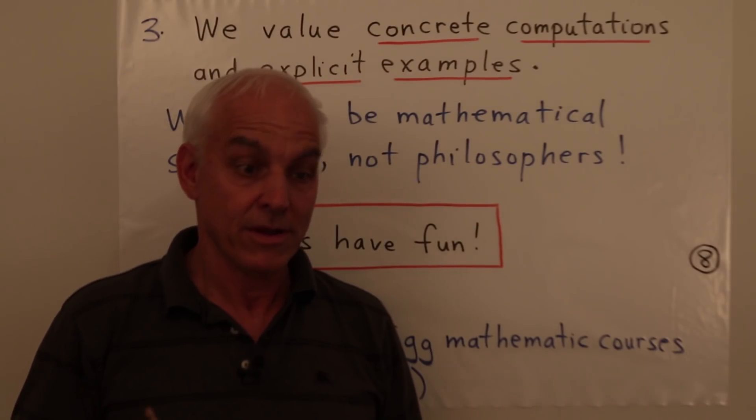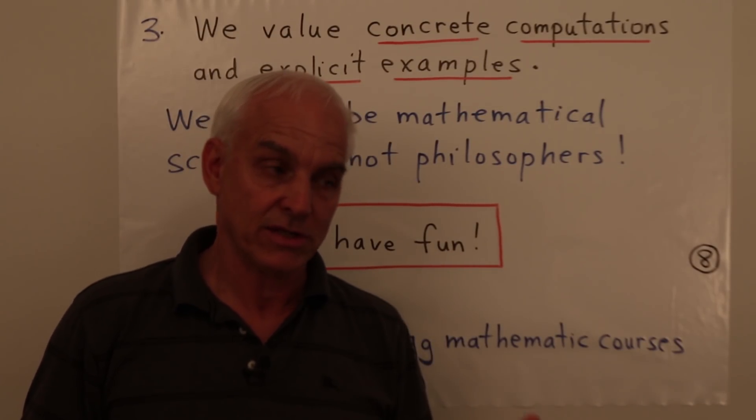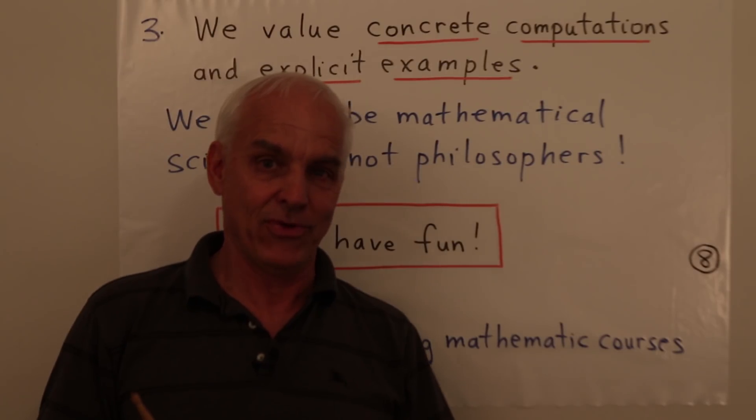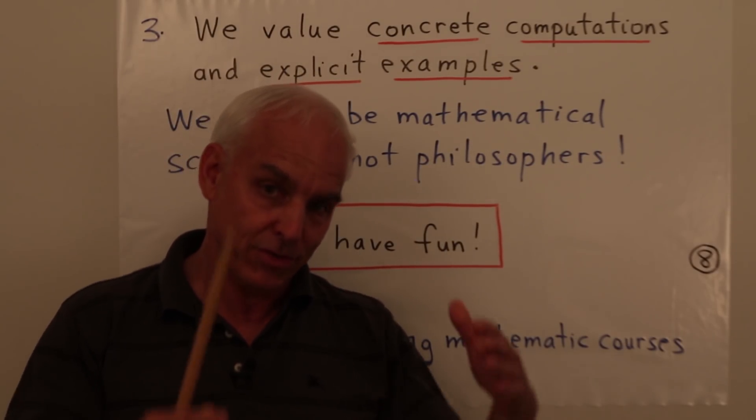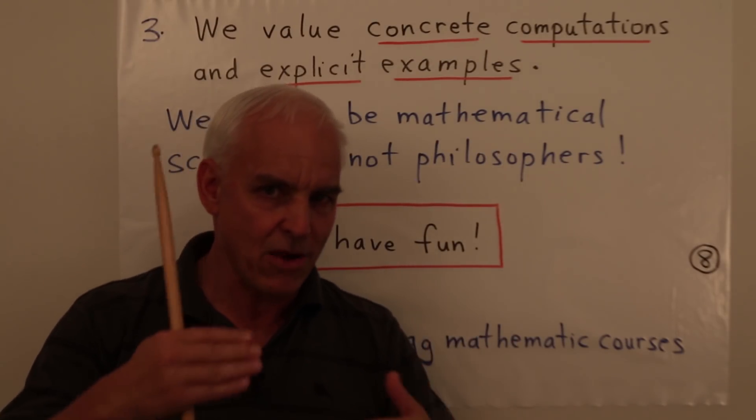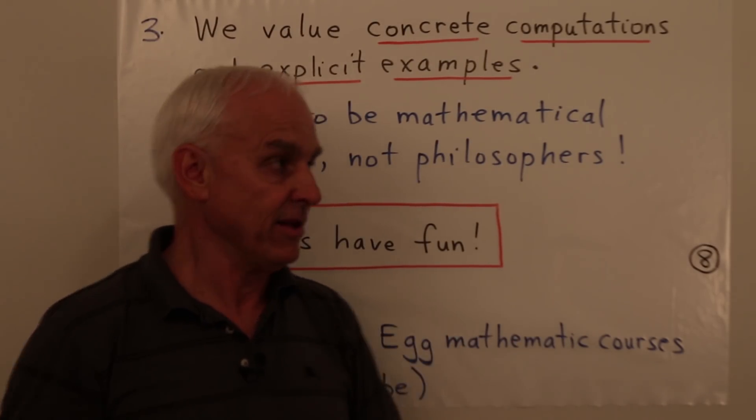A mathematician makes computations in the same way that a scientist makes observations. Without observations, science is very weak. Similarly, without computations, without explicit examples, mathematics turns out to be very weak as well. We're trying to make it solid. This is a way of grounding us by looking at these things.